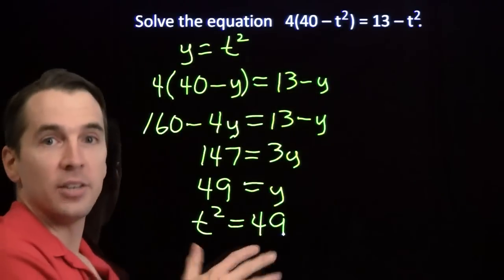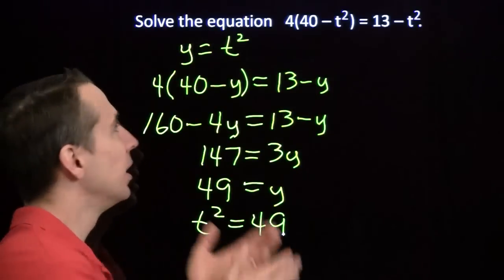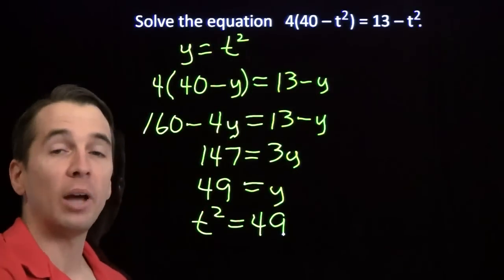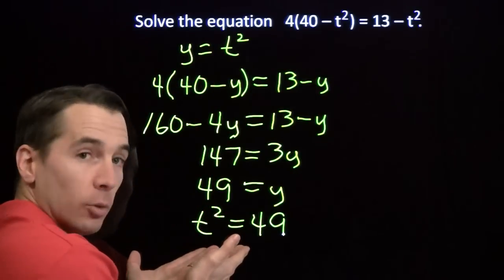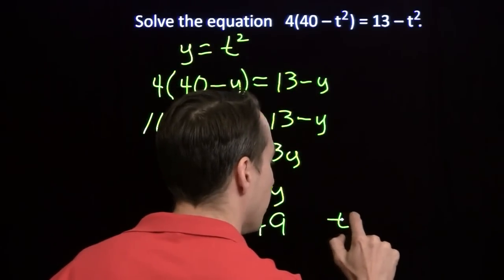So now you write down 7. And you're not completely correct. Solve the equation means we have to find all values of t that work. 7 works, but so does negative 7.